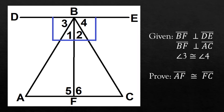First, we are given that line segments BF and DE are perpendicular. Is there a consequence with this statement? Yes! It will make angles DBF and EFD to be right angles because adjacent angles are complementary if exterior sides are perpendicular to each other. Right angles are formed so that angles 3 and 1 are complementary angles, and angles 4 and 2 are complementary angles. Recall that complementary angles are angles whose sum is 90 degrees or a right angle.